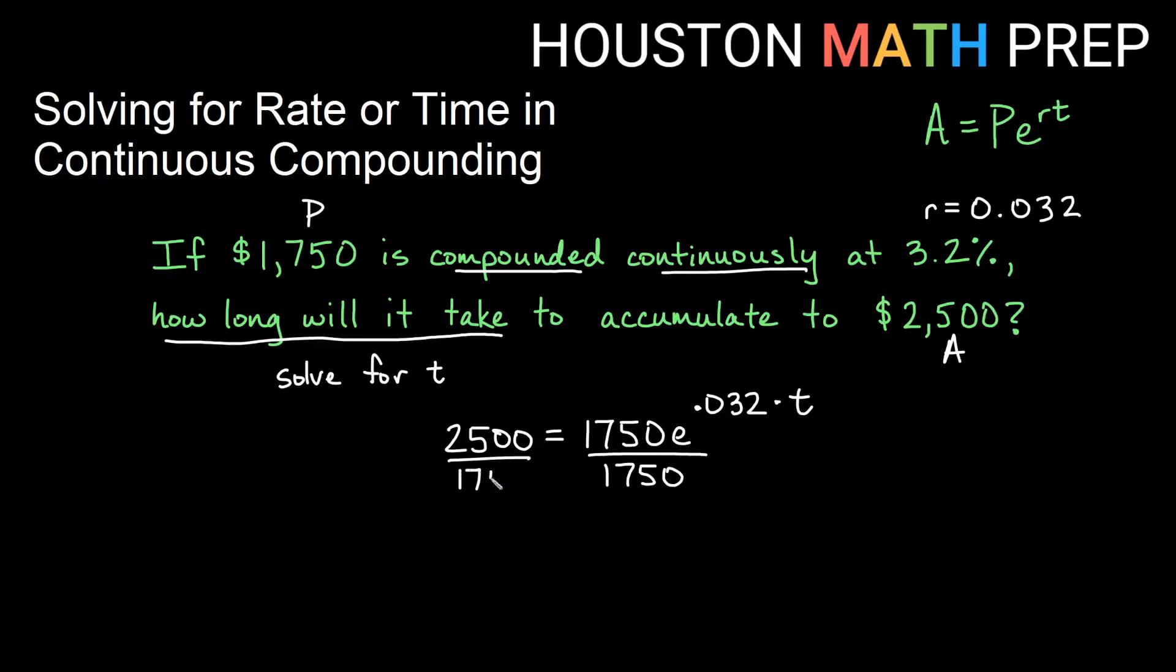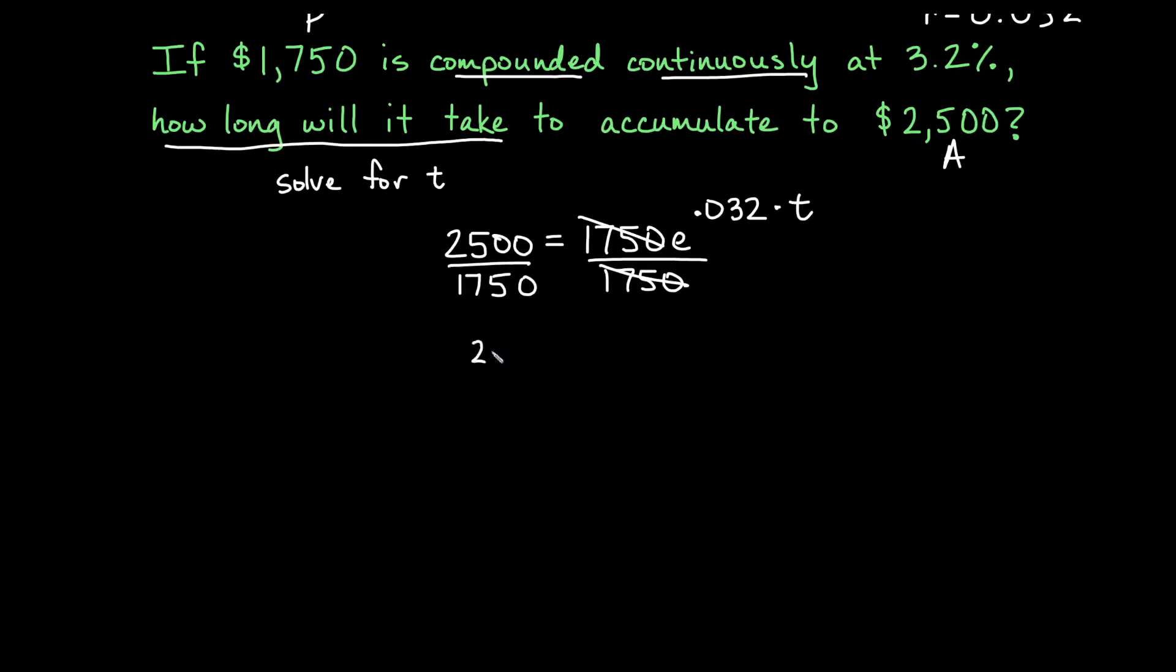I'm going to go ahead and not simplify here and just do everything in the calculator at the very end. I'll at least reduce my $1750, but I'm going to not reduce this $2500 over $1750, even though I could do so. Okay, so let's write down what we have. So we have $2500 over $1750 is equal to e to the 0.032 times t.